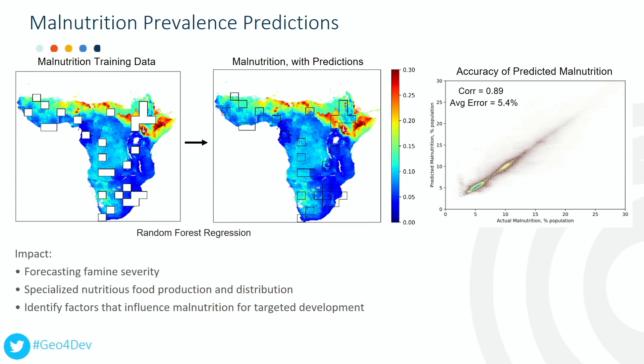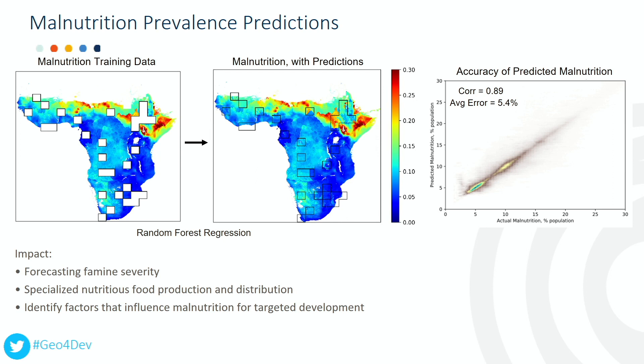This method is able to predict malnutrition prevalence with minimal error. I fit a random forest regression to 15 years of training data with select boxes removed. Here I show the malnutrition prevalence in 2015 with the boxes filled in with predictions. The correlation between the predicted and actual malnutrition was 0.89, with an average error of 5.4%. Real-time malnutrition estimates could be useful for forecasting famine severity and planning the production and distribution of specialized nutritious foods. It could also help identify factors that influence malnutrition for more targeted international development.